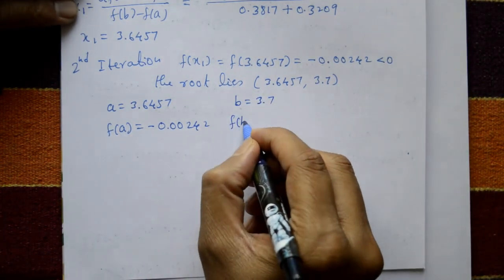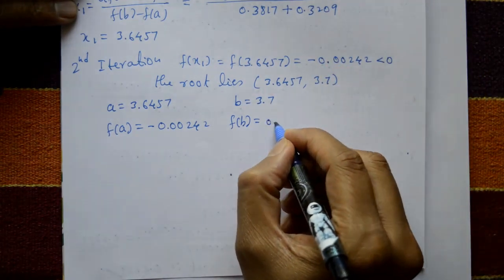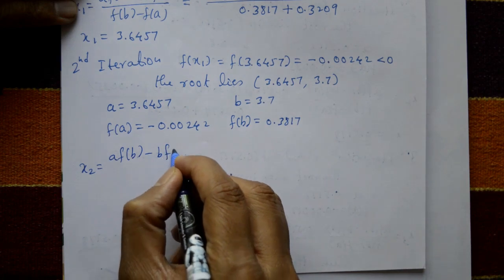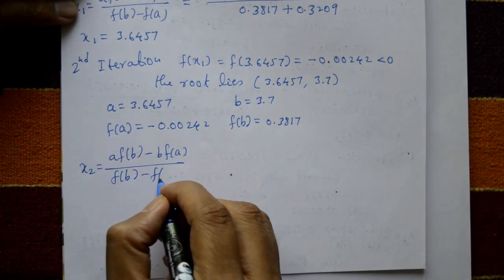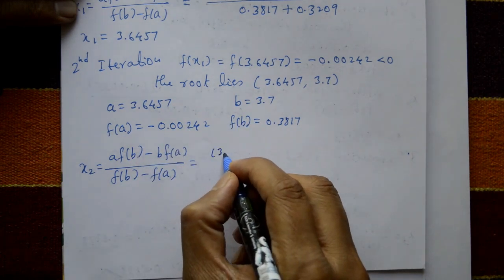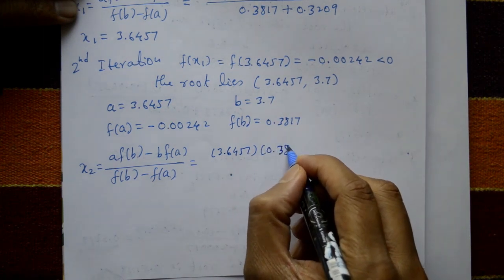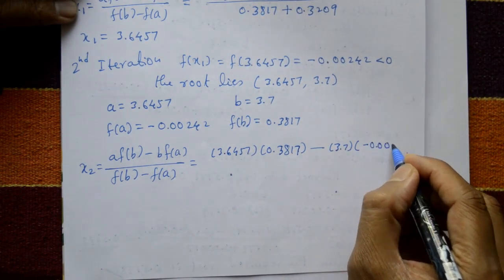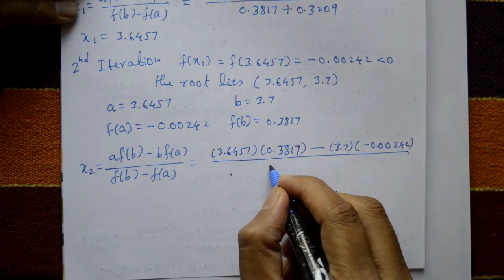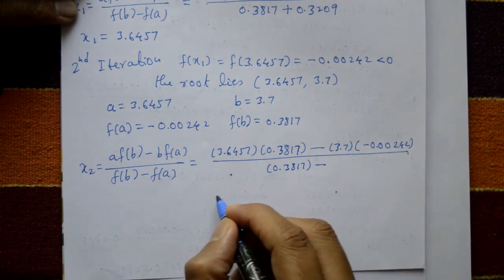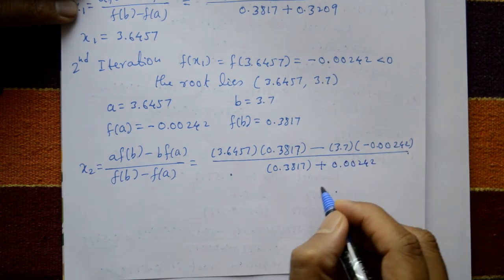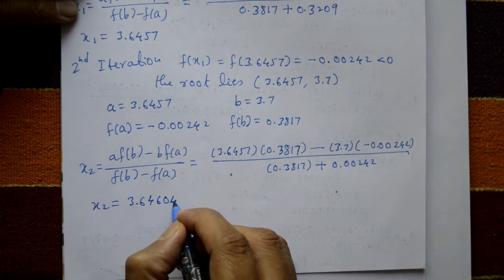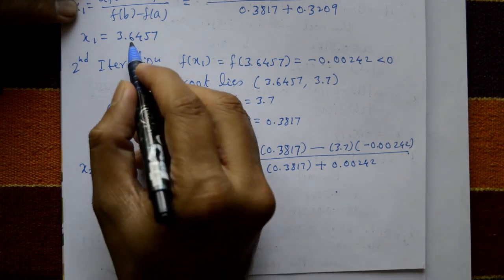b = 3.7 and f(b) = 0.3817. Using the same formula for second iteration: x2 = [a × f(b) minus b × f(a)] divided by [f(b) minus f(a)]. Substituting: 3.7 × f(a) = minus 0.00242, divided by 0.3817 minus (minus 0.00242). x2 = 3.646042.